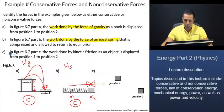Great, now let's take a look at part C. In figure 6.7 part C, the work done by kinetic friction as an object is displaced from position 1 to position 2.